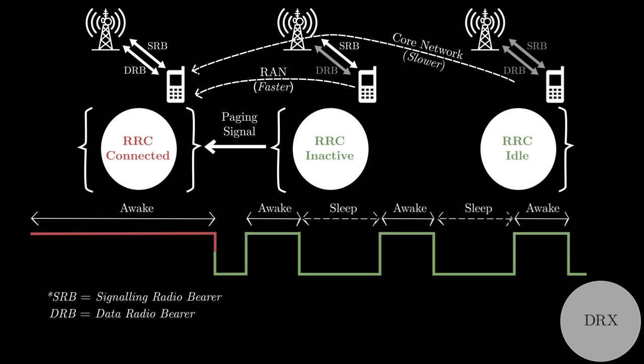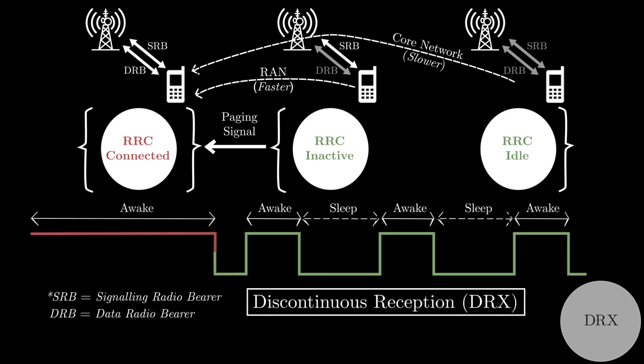Therefore, UE has to wake up periodically and monitor the paging signal. To be more precise, UE has to wake up periodically and stay awake for a small duration and go back to sleep again, and then repeat this cycle. This periodic wake up and sleep cycle is called discontinuous reception, or DRX.